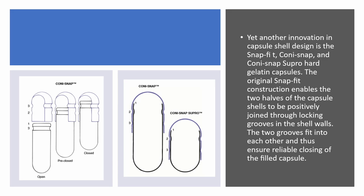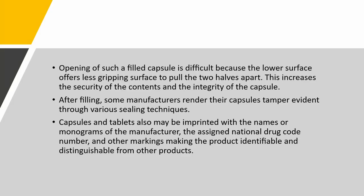Another innovation in capsule shell design is the Conisnap and Conisnap Supro. The original snap-fit construction enables the two halves to be positively joined through grooves in the shell walls, so they fit into each other and reliably close the entire capsule — once joined they cannot be separated without puncturing the capsule. After filling, some manufacturers also render their capsules tamper evident through various sealing techniques. Capsules and tablets may also be imprinted with the names or monograms of the manufacturer, the national drug code, and other markings making the drug identifiable.